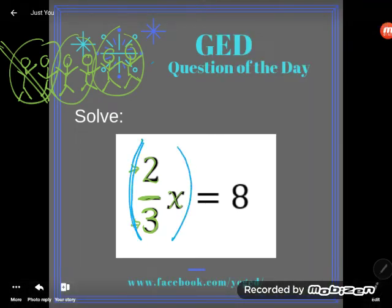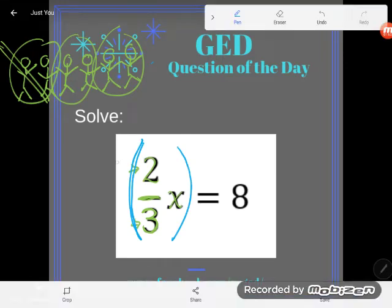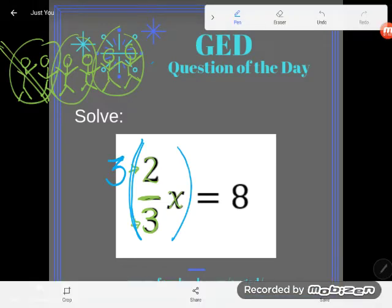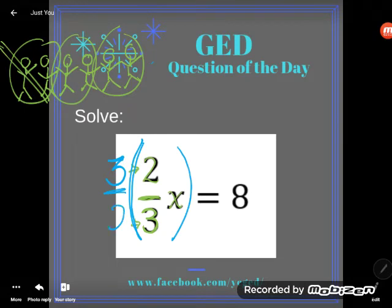Right now, that 3 is on the bottom of a fraction, it's dividing. I'm going to throw that 3 on the top to be multiplying. And similarly, that 2 on the top is a multiplier, so I'm going to throw that 2 on the bottom to divide.